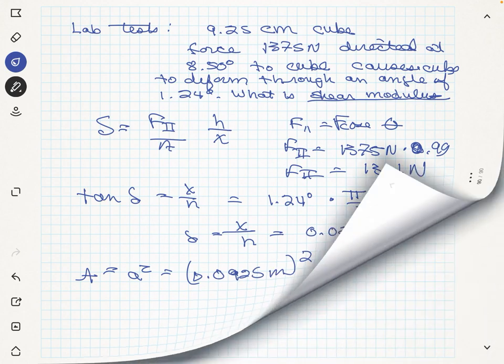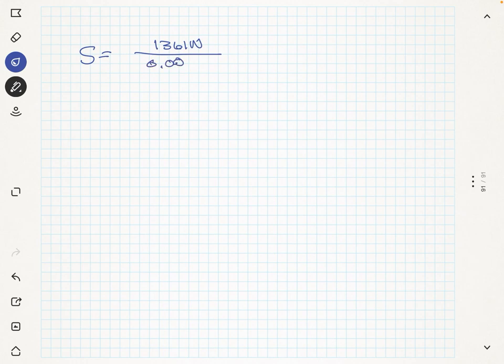So now that we've got all this, let's go use our beginning formula. So S will equal 1,361 newtons over 0.00855 meters squared, and we'll have that 1 over 0.021.